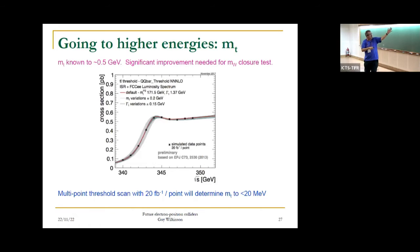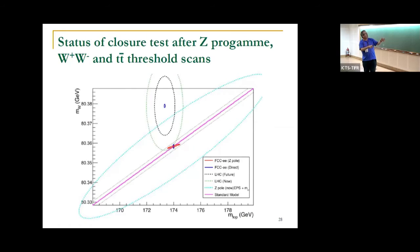The top mass will also be measured similarly in one of these threshold scans at 365 or 350 GeV. If you put everything together, this is the same closure plot you saw before. In blue, this is the current prediction. In green, the current measurements. Down here is where you expect to be after FCC-ee. In red, the predictions we will have then, and in blue, the measurements we will have then. You see the exquisite exactitude of the situation we will hopefully achieve.